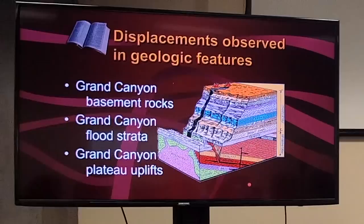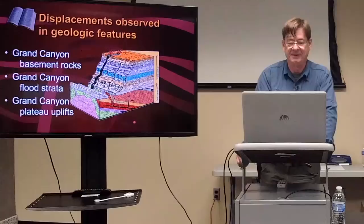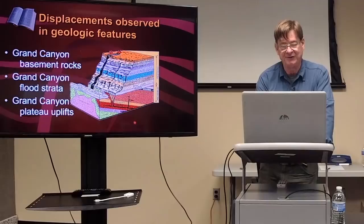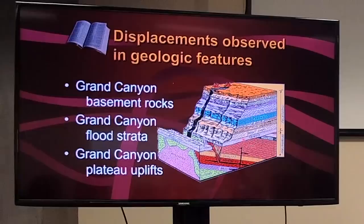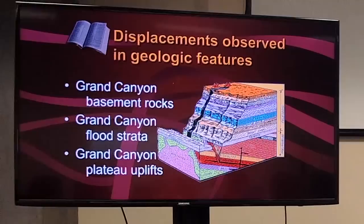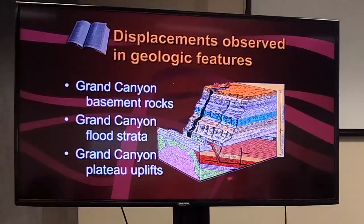Grand Canyon Basement Rocks, Grand Canyon Flood Strata, and Grand Canyon Plateau Uplift all have something to do with global tectonics. The tilted basement strata at the bottom of Grand Canyon are probably associated with flood tectonics. The 4,000 feet of flat-lying layers above may represent flood deposits. The Zoroaster Granite, Vishnu Schist, and buried strata above them probably represent Creation Week strata and early pre-flood ocean floor, followed by rock deposited by the flood and tectonic upheaval associated with the breaking up of the fountains of the deep.